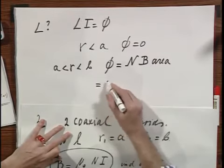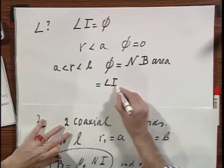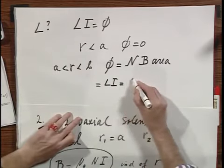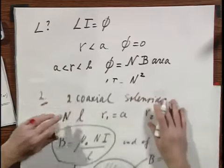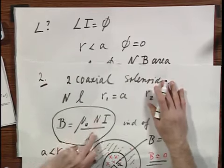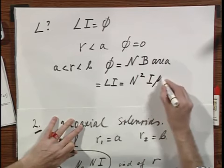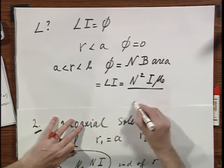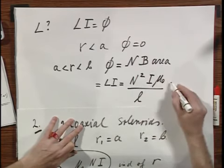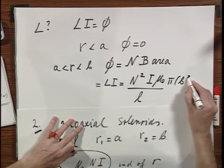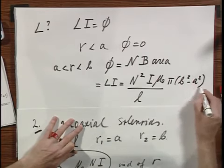And so I find Li, which is this phi. I get an N squared now, because B has an N in it. I have an I. I have a mu zero. And I have an L. That's the B field. And then the area equals pi times B squared minus A squared.